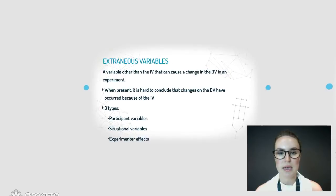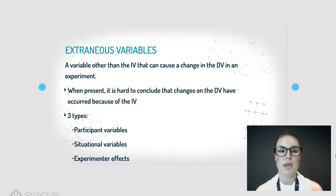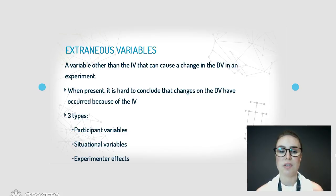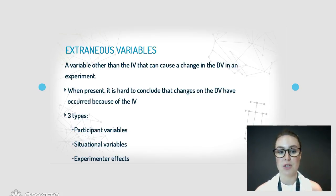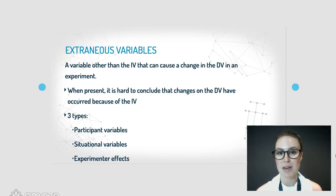Extraneous variables — this is any variable other than the independent variable that can cause a change in the dependent variable. These are bad. If you're conducting an experiment you don't want a lot of these because they really affect your results. It means that it's hard to conclude that any changes have actually happened because of the independent variable rather than something else.